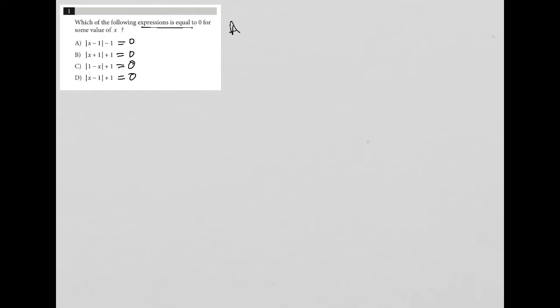So when I try answer choice A, I have absolute value x minus 1 minus 1 equals zero. I can add 1 to both sides here, leaving me with the absolute value of x minus 1, just make sure those absolute values are clear, is equal to positive 1.